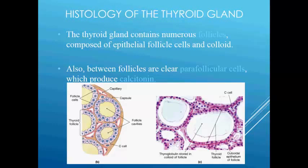Between follicles there are clear parafollicular cells that produce calcitonin. Each lobule — and you can see multiple lobules here — consists of numerous ovoid or spherical thyroid follicles, also called acini, which are held together by connective tissues.